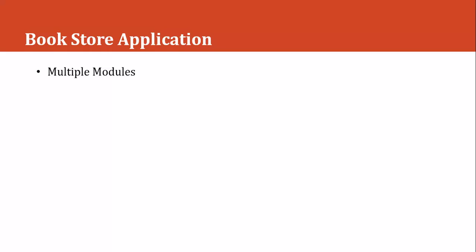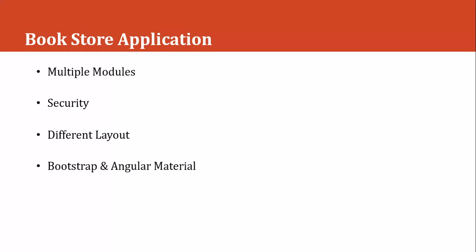In this bookstore application we will have multiple features, and based on those features we will have multiple modules. We will also use security - meaning login, sign up, change password and all those things. Then we may have different layouts because we will have admin, user, and public features. To work on the design we will use Bootstrap and Angular Material, though it is not mandatory to use both.